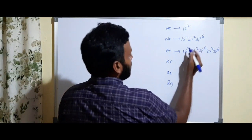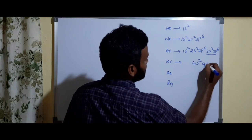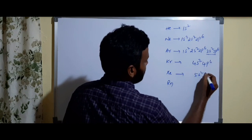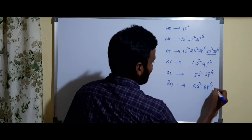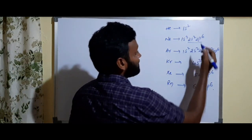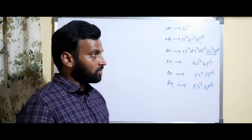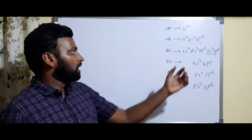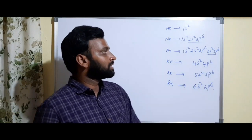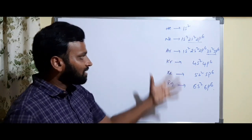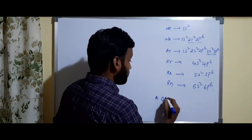Similarly, krypton has 4s², 4p⁶ at last, xenon has 5s², 5p⁶ at last, and radon has 6s², 6p⁶ at last. 'Last' means the last shell — the highest n value, which we call the outermost shell. So 2s², 2p⁶ is the outermost shell for neon because the highest n value is the outermost shell. These are noble gases and the outermost shell electronic configuration is the same — we call it the octet configuration.